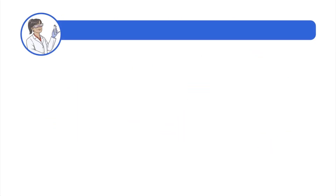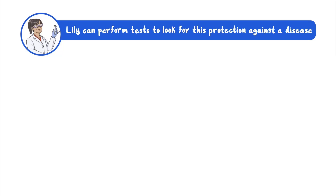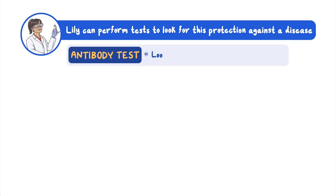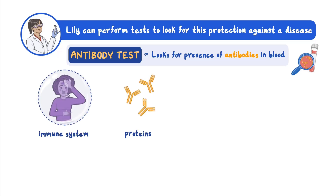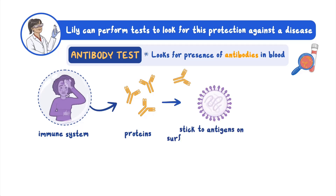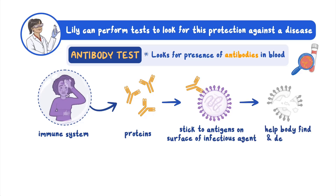Luckily, Lilly can perform tests to look for this protection against a disease. One test is called an antibody test and looks for the presence of antibodies in a person's blood. Antibodies are proteins the immune system creates to fight off an infectious agent. Different antibodies are produced to fight different infectious agents. These antibodies stick to the antigens on the surface of the infectious agent to help a person's body find and destroy it.